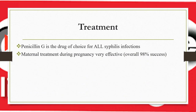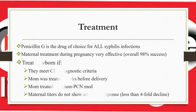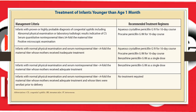Penicillin G is the drug of choice for all syphilis infections. Maternal treatment during pregnancy is very effective — treating before four weeks of delivery achieves 98 percent success. Treat the newborn if they meet CDC diagnostic criteria, if the mother was treated less than four weeks before delivery, if treated with a non-penicillin drug, if maternal status shows inadequate response, or if titers show less than fourfold decrease. For proven or highly probable congenital syphilis, treat with aqueous or procaine penicillin for 10 days.